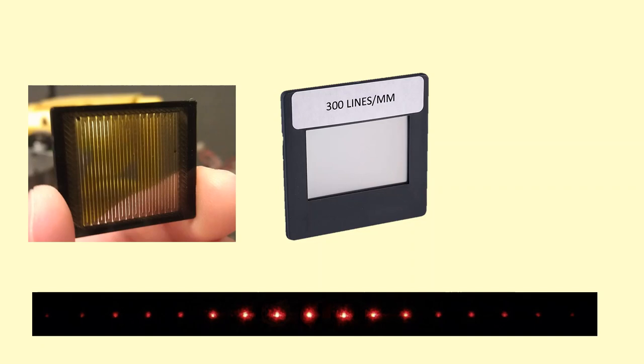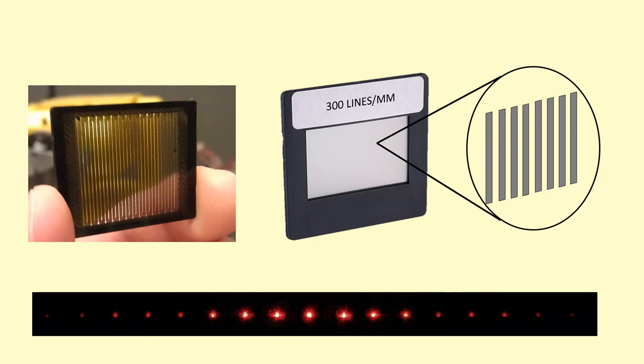Which means you can't even see them because the distance between the lines is so small. So what we're interested in firstly is the distance between lines. When we zoom in, we're interested in that d there, the slit separation.